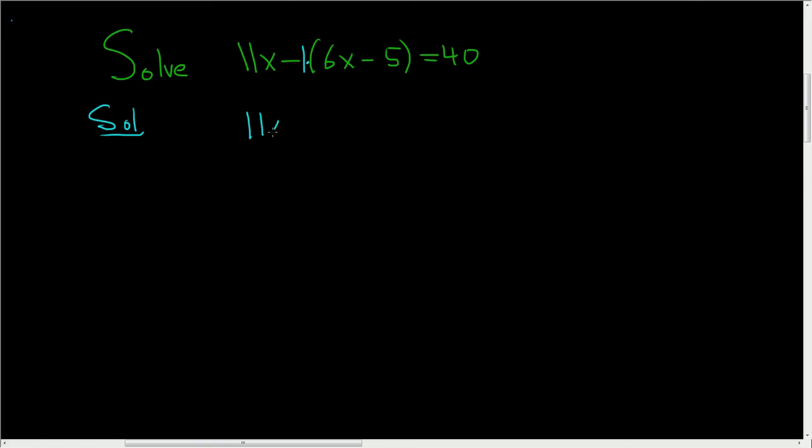So we have 11x minus 6x, and then negative 1 times negative 5 is going to give us a positive 5, and this is equal to 40.